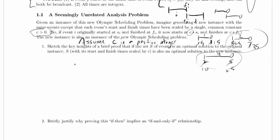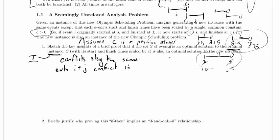So let's just write that out. Conflicts stay the same. In other words, i and j events, i and j conflict, and you know what, let's give a name to this. So here's the original instance. The original instance I'm going to call I, and the new instance I'm going to call I prime. So conflicts stay the same. Events i and j conflict in I if and only if they conflict in I prime.